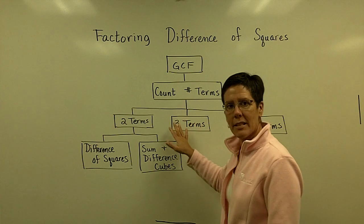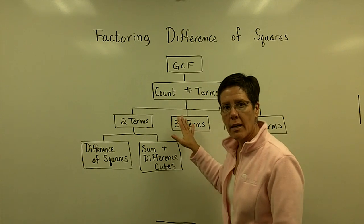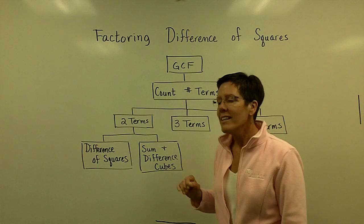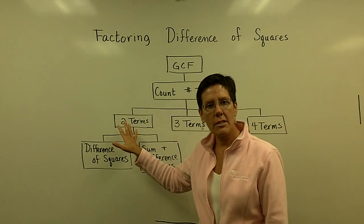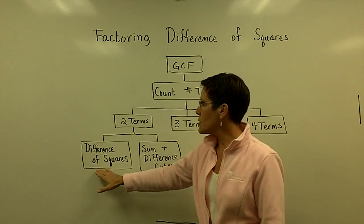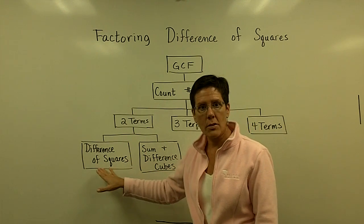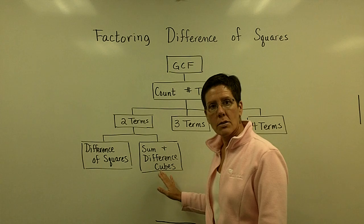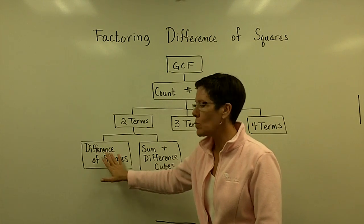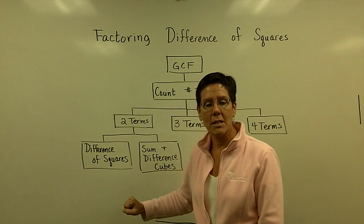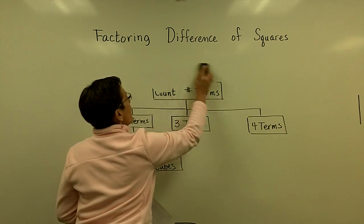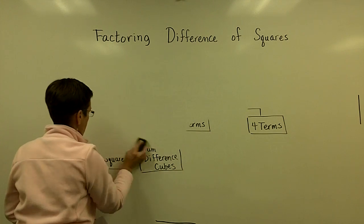We spent a lot of time recently on factoring three terms, and a lot of videos ago we were working on factoring something with four terms. Now we're going to look at the situation where we factor something with two terms. The first scenario is called the difference of squares. There is one other scenario — sum and difference of cubes — but I'm going to focus right here on the difference of squares.